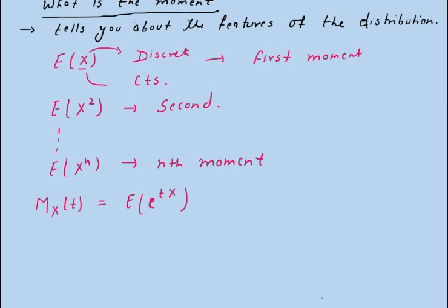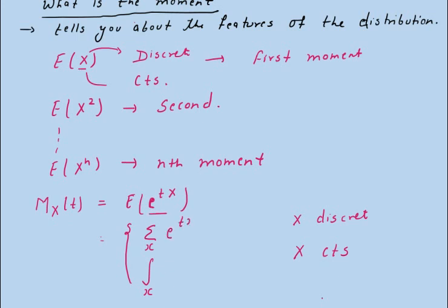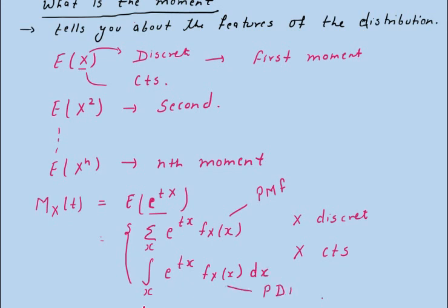If X is a discrete random variable, the expected value is computed by summation over all values of X using e^(tX) times the probability mass function f_X(x). If X is continuous, the expected value is computed by integration of e^(tX) times the probability density function f_X(x) with respect to dx.